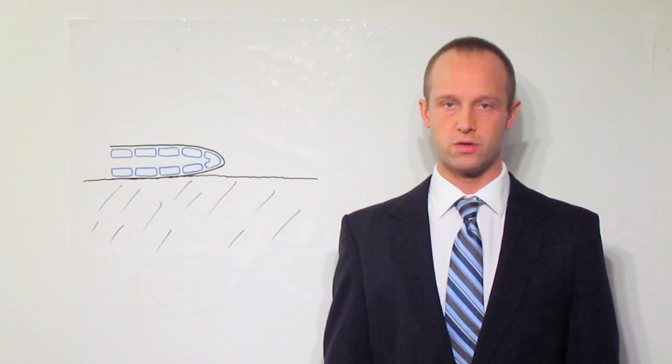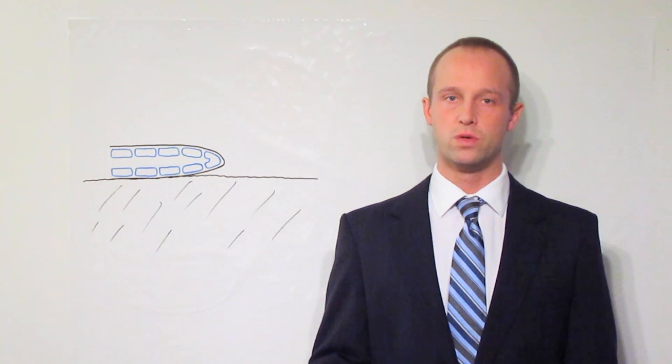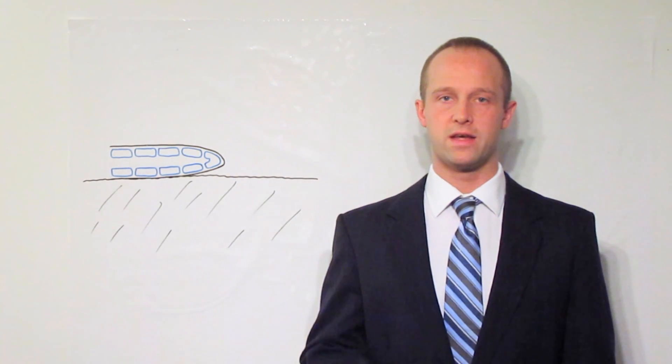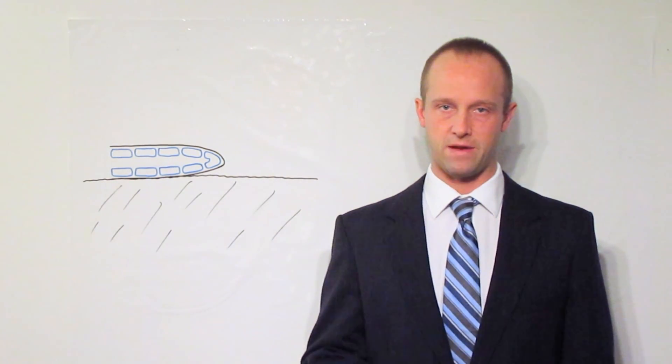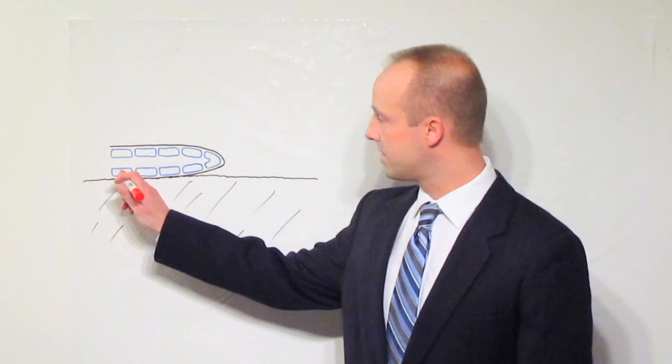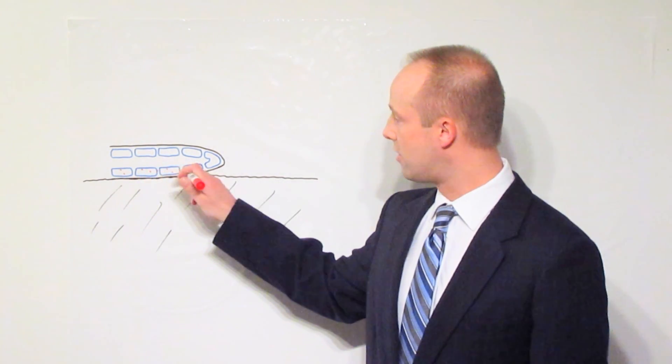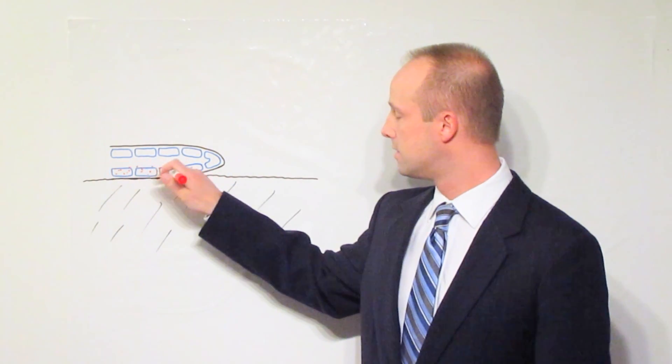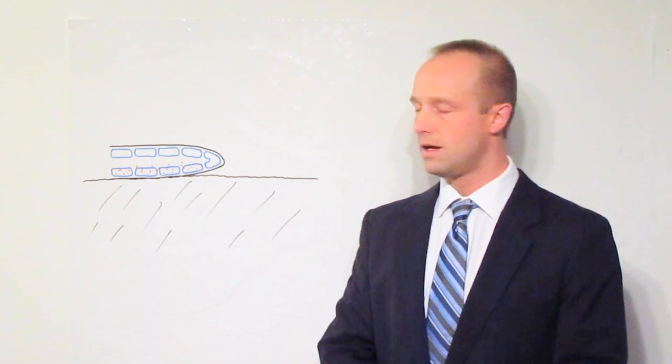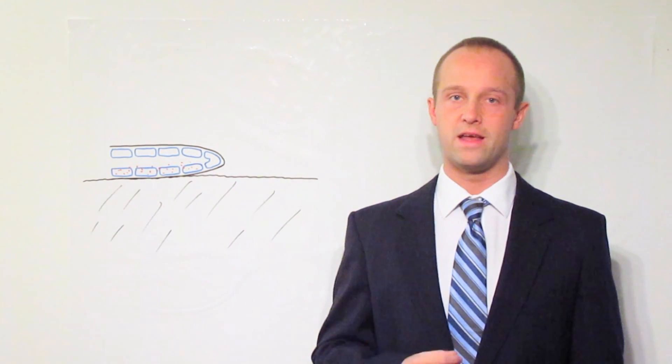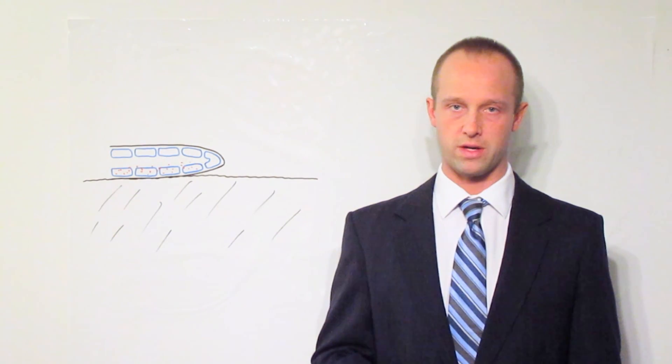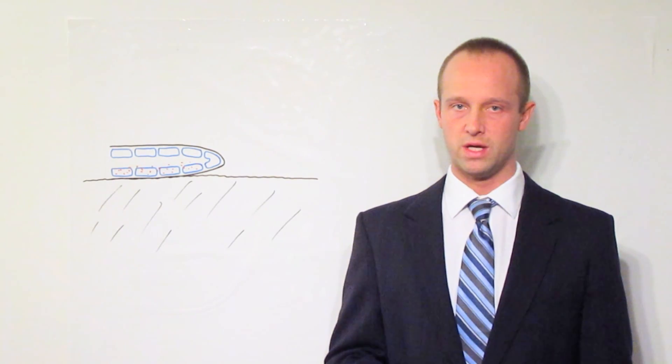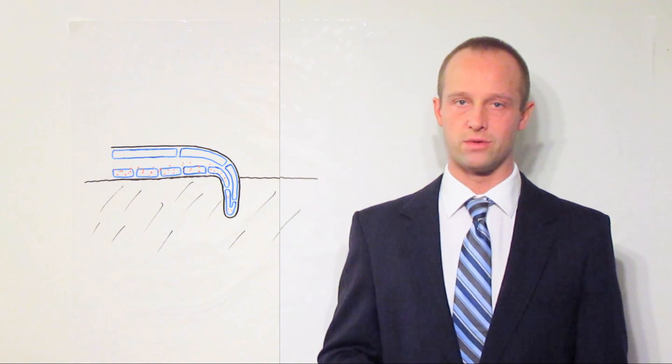Gravitropism, sometimes also called geotropism, occurs in the roots of plants. It's still auxin which is controlling the process, but in this case, the auxin is having the opposite effect to what it had on the shoots. It gathers in the cells along the bottom of the root. It gathers down here due to gravity. And once it's gathered there, what it does is it inhibits the growth rate of the cells where it gathers. So the cells on the top of the root grow at a faster rate than the cells on the bottom of the root. And the root then pushes its way down into the soil.